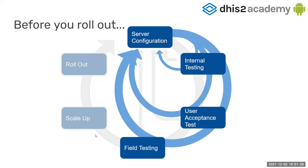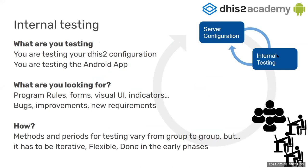These phases are very important. You have to be rigorous and strict in following this process for a successful implementation. Internal testing — the first phase of your configuration — is done by a very small team, probably your subject matter experts and technicians. What you are testing here is the configuration and the Android app: what it can or cannot do, what is a bug, what is supported, how your configuration is behaving, whether program rules work properly, if forms look as expected, if the data entry flow and visual configurations work, and if indicators work as expected.